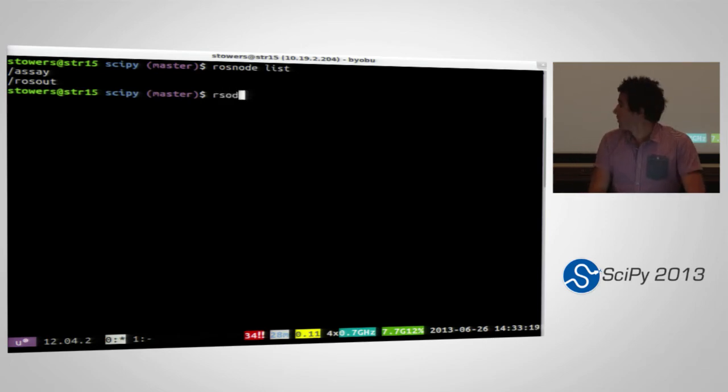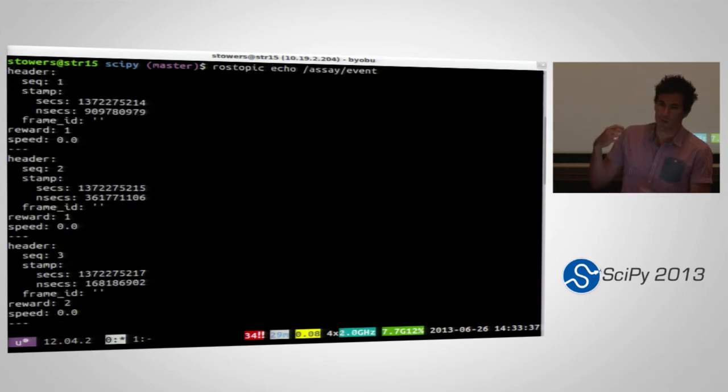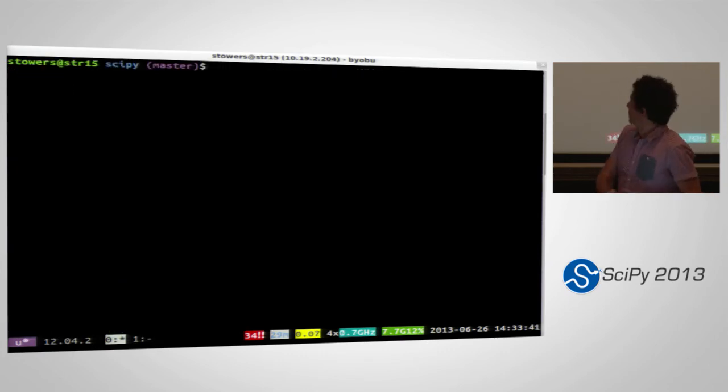We can immediately see what that node's doing by using another command line tool called ROS topic, which command line completes again. And it just lets you inspect the values of things the node is publishing. So let's inspect the value of the event to see if the mouse is making any choices. Oh, there we go. So we can see it chose reward one, which let's say is the green box.